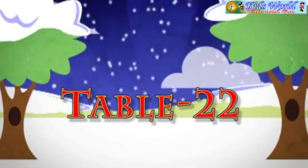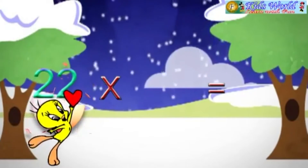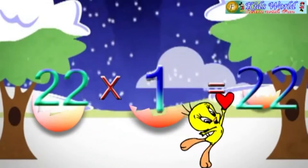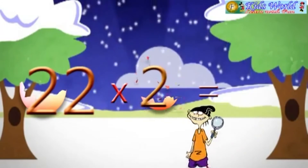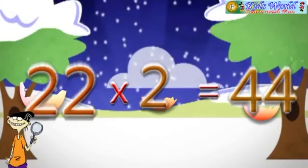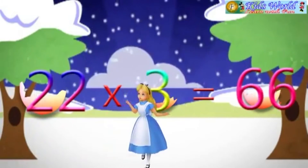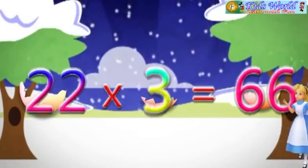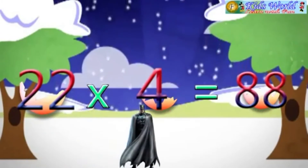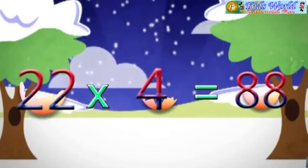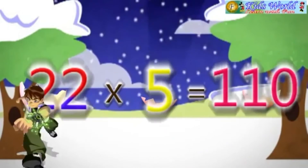Table 22. 22 into 1 is equal to 22. 22 into 2 is equal to 44. 22 into 3 is equal to 66. 22 into 4 is equal to 88. 22 into 5 is equal to 110.